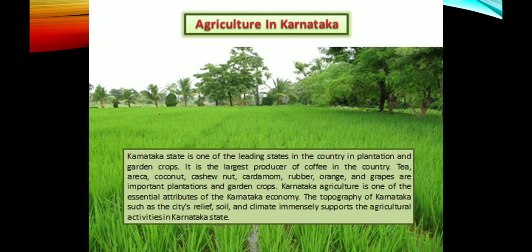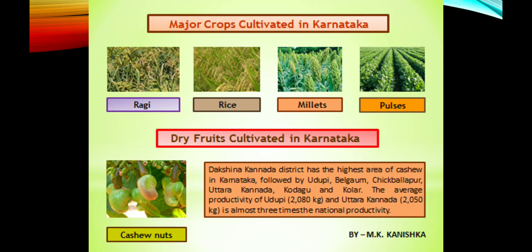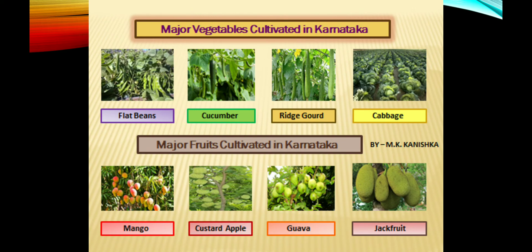Major crops cultivated in Karnataka include ragi, rice, millets, and pulses. Cashew nuts are the major dry fruit, and Dakshina Kannada district has the highest area of cashew cultivation, followed by Udupi, Belgaum, Chikballapur, Uttara Kannada, Kodagu, and Kolar. The average productivity in Udupi is 2080 kg and in Uttara Kannada is 2050 kg, which is almost three times the nation's productivity.